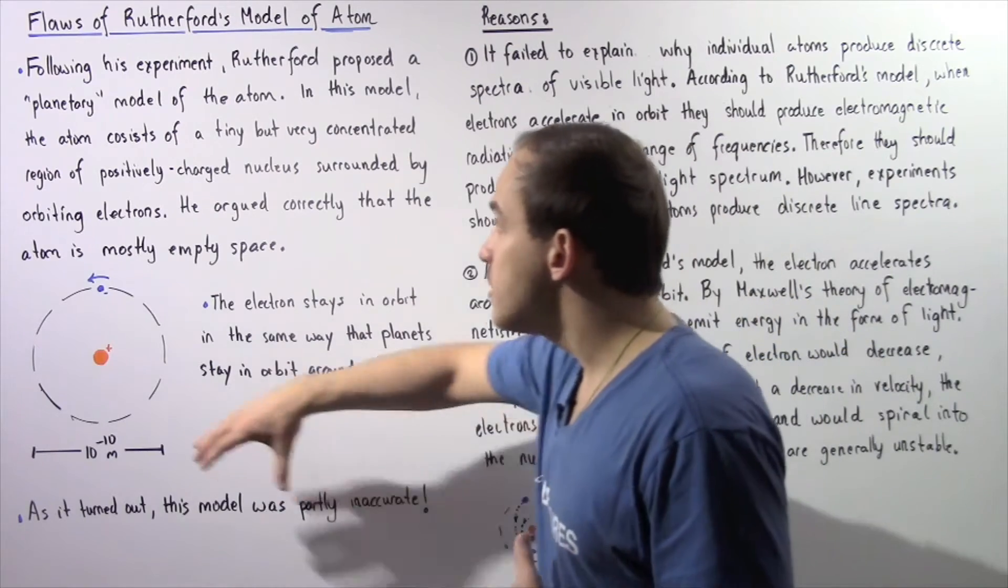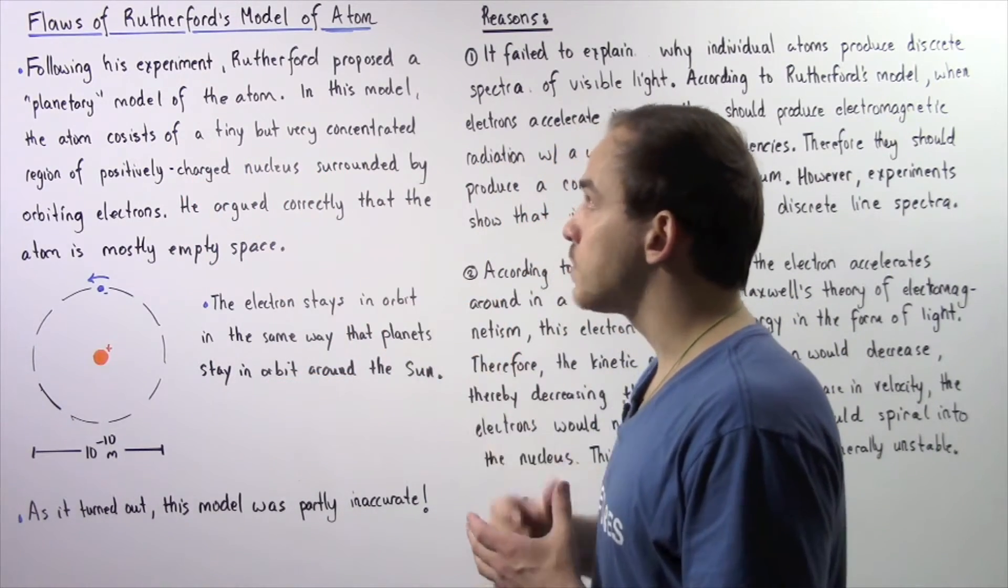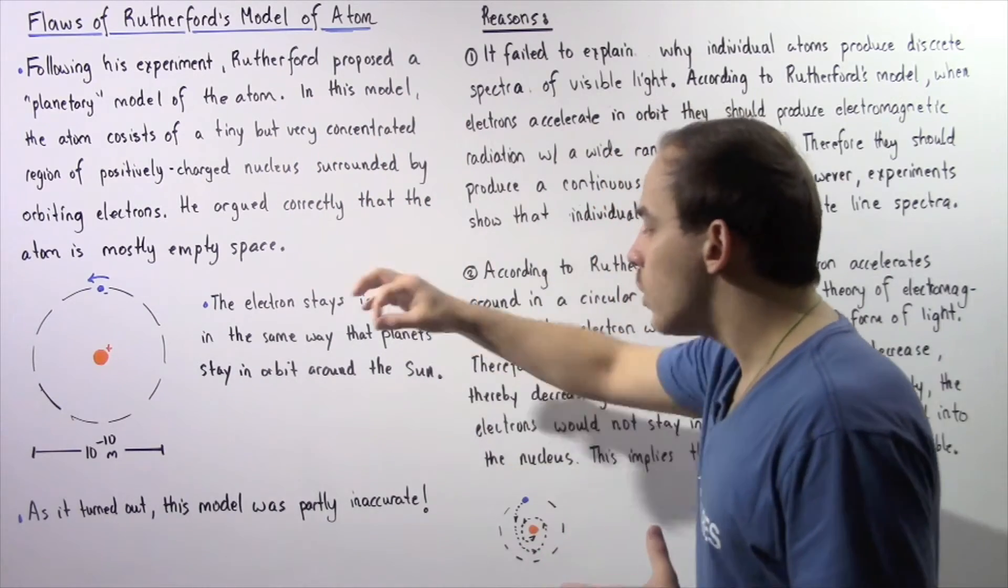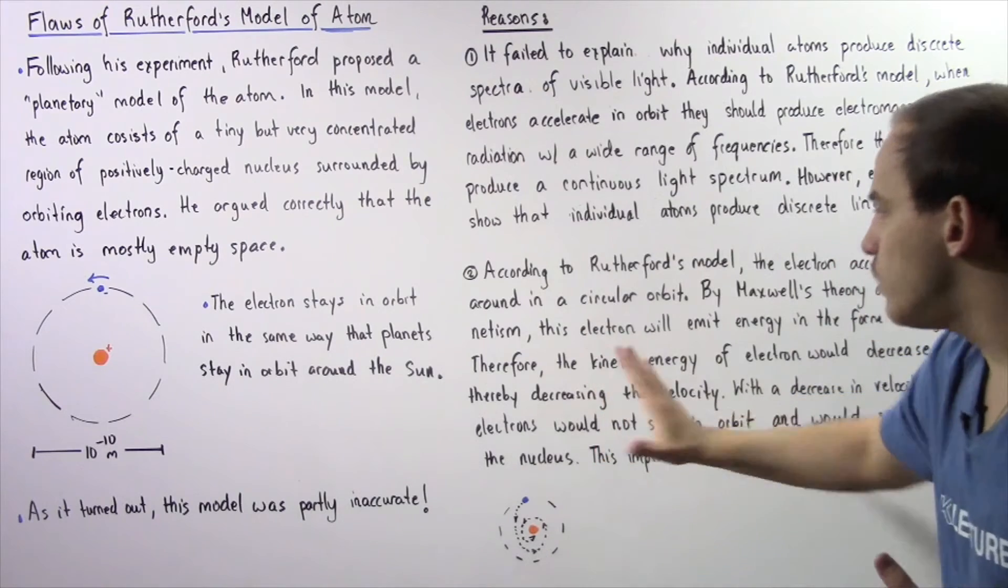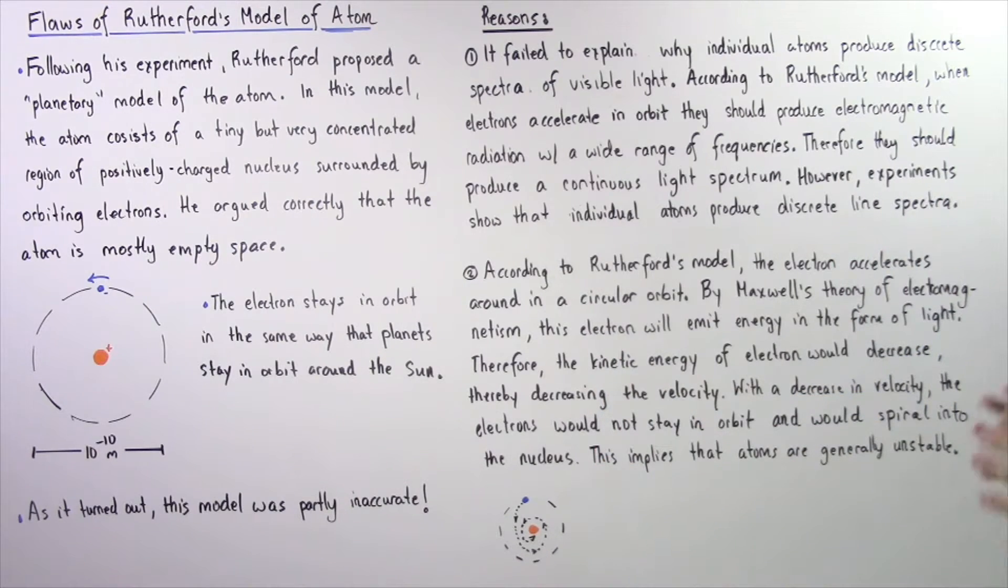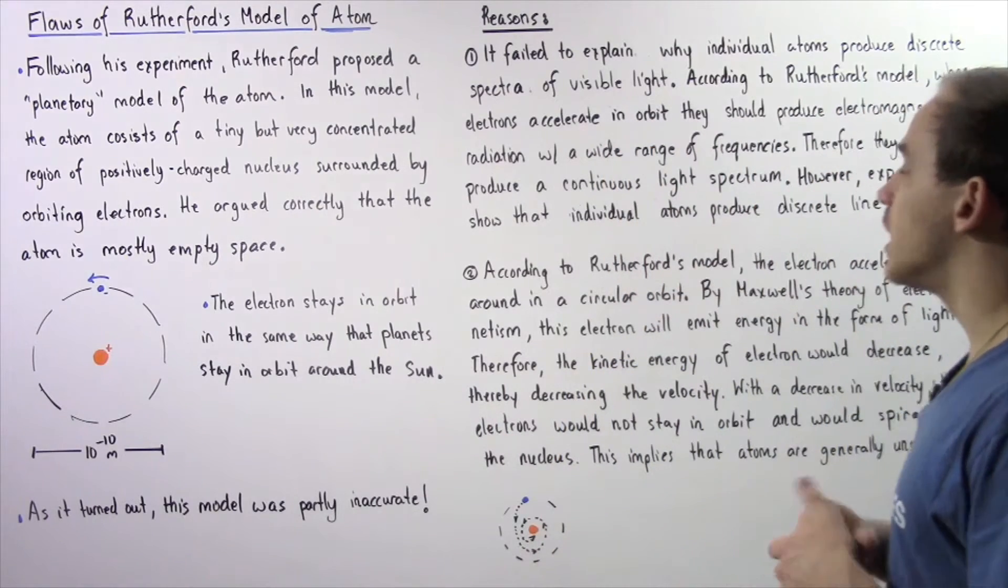Now as it turned out, this model, the planetary model of the atom that was proposed by Rutherford, was partly inaccurate and that's because of the following two important reasons. So let's begin with reason or flaw number one.